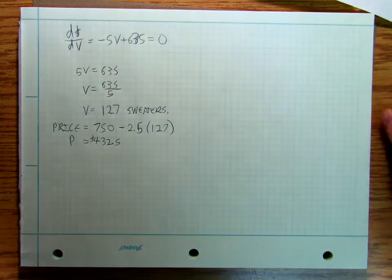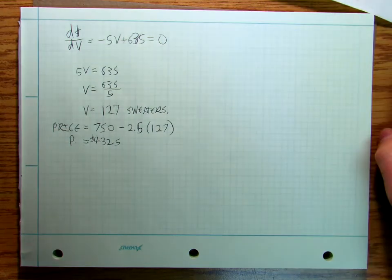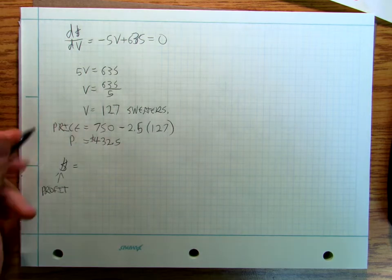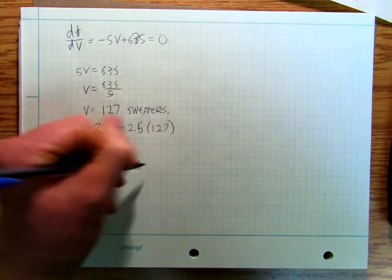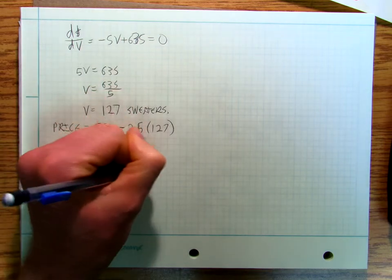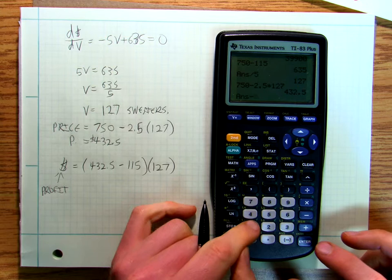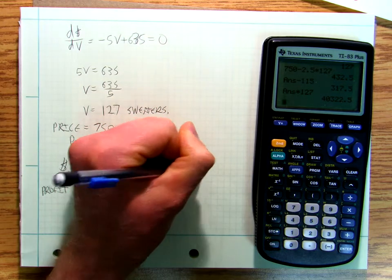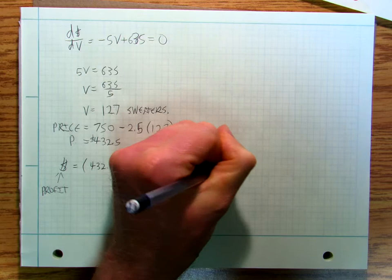And probably people are not going to care about the 32.5, but this is calculus, we want to be exact. So now my profit is equal to my price which is 432.5 minus my fixed cost which is 115 in yarn and supplies times my quantity that I can sell at that price. So I do 432.5 minus 115, I multiply that by 127 and I get $40,322.50.